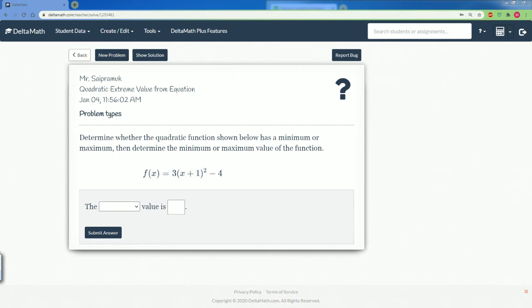Welcome to the Delta Math Tutorial solution. This is going to be covering the quadratic extreme values of the equation. The problem asks you to determine whether the quadratic function shown below has a minimum or maximum, then determine the minimum or the maximum value of this function. So here you have the quadratic function in vertex form. They ask this for the minimum and the maximum.